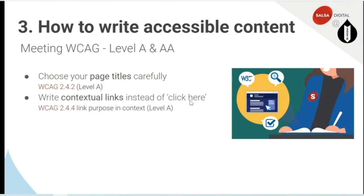Use contextual links instead of 'click here.' It still drives me crazy seeing 'click here' — it's as bad as apostrophes in the wrong spot. It's still out there because people don't know, and if they don't know, how can they not do it? It's important to understand why 'click here' is bad. In terms of WCAG, it's 2.4.4 — link purpose in context. People using a screen reader will often have settings to read out the links. If it just says 'click here,' they have no idea what they'll find. But if you have something like 'Download 2022 annual report' as the hyperlinked text, that's what gets read out to them — and they know exactly what they're getting.